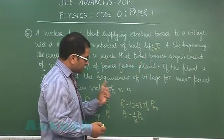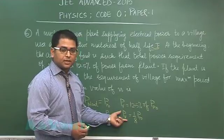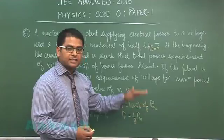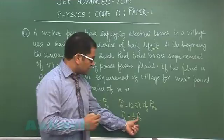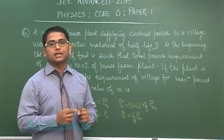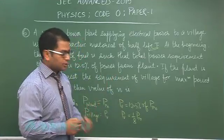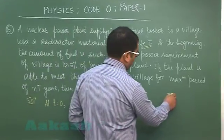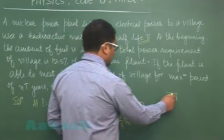So that's very clear, we are assuming that the power requirement of the village would be constant. So as the power output from the plant would start decreasing, a time will come when its output would be 1 by 8 of the initial output. Beyond that the plant would not be sufficient to deliver power to that village. So quite obviously that is 1 by 8 times, so it would be requiring 3 half lives, therefore the value of N would be 3.